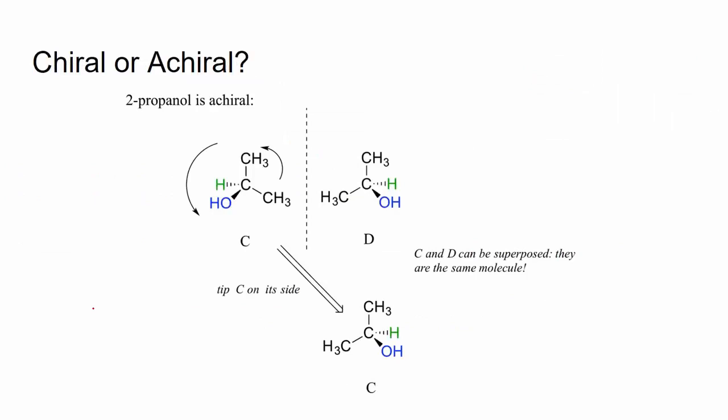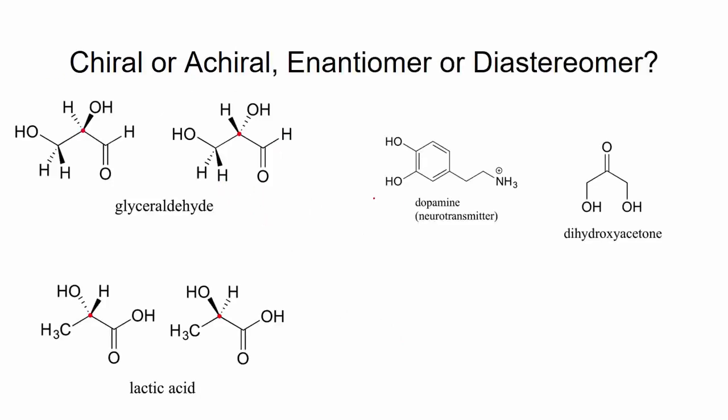Let's determine if compounds are chiral or achiral. Here we have 2-propanol. 2-propanol has two methyl groups on the central carbon, so this is not an asymmetric center. You should be able to rotate 2-propanol to find that its mirror image is superimposable — they are the same molecule, so it is achiral.